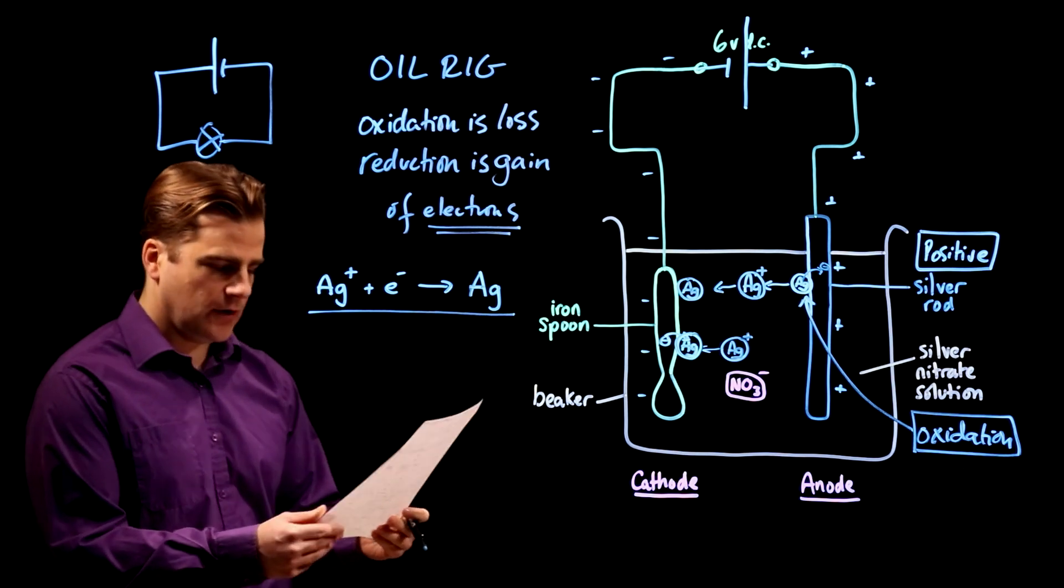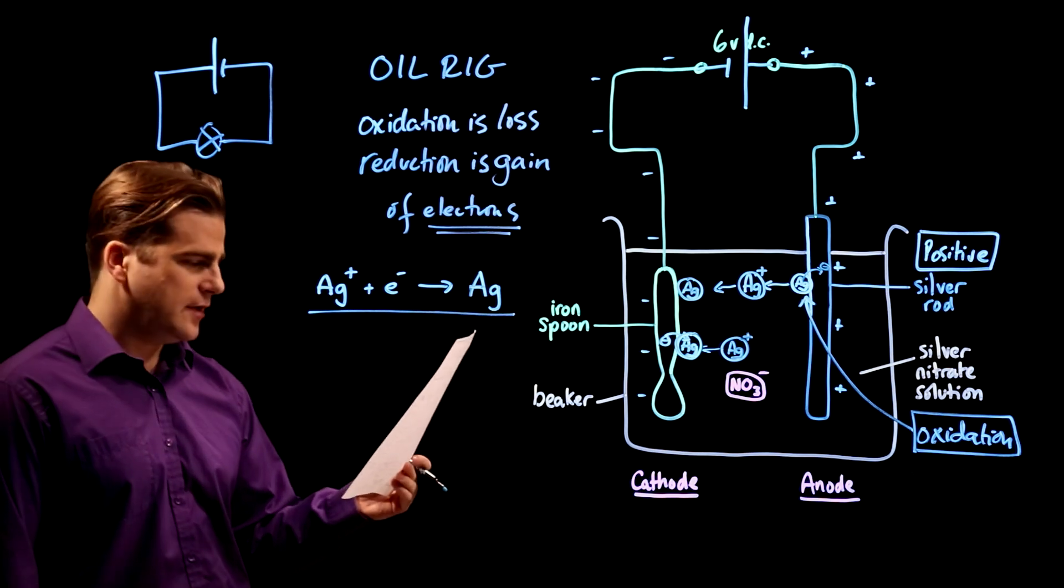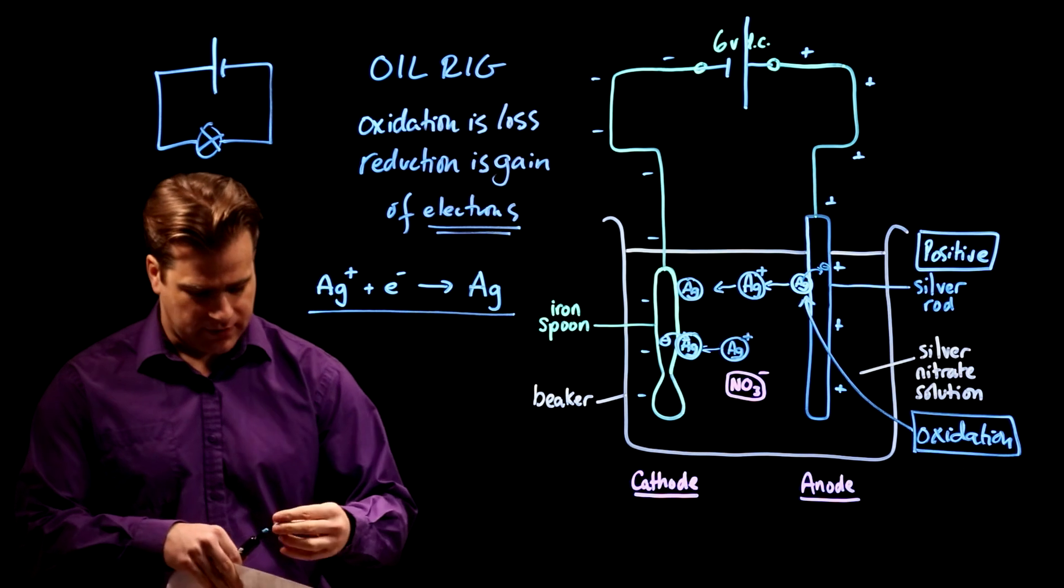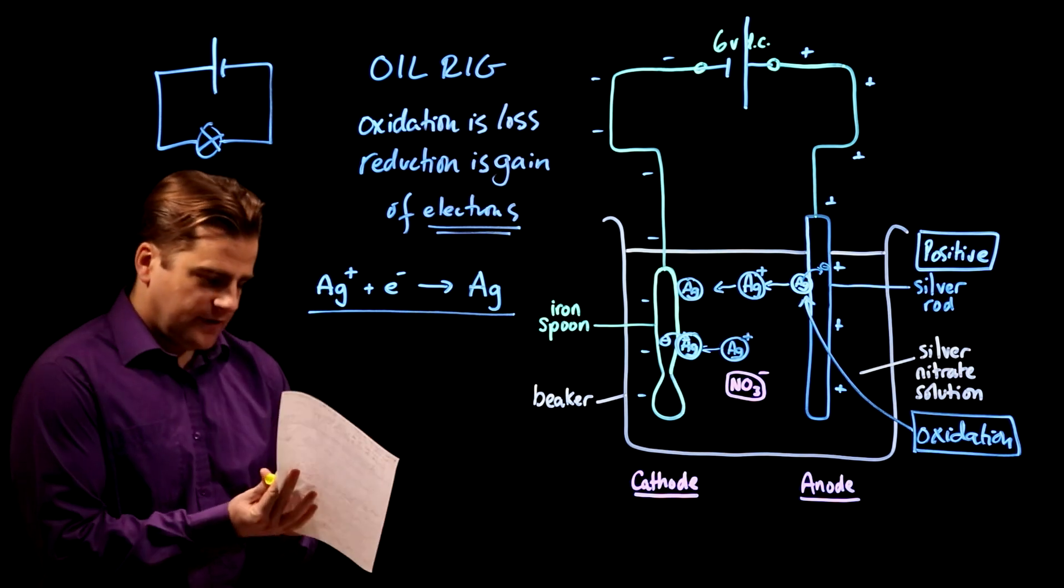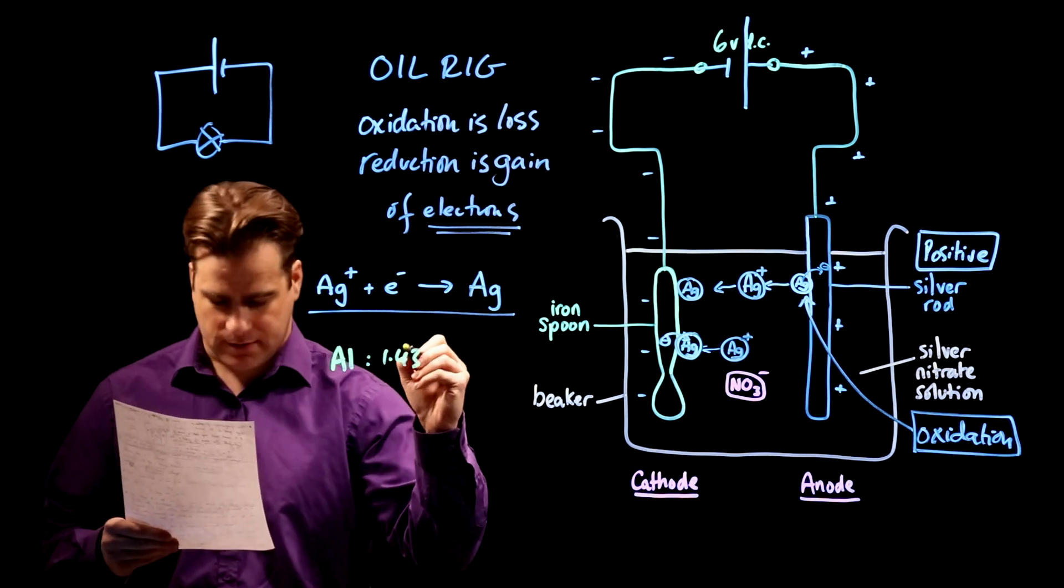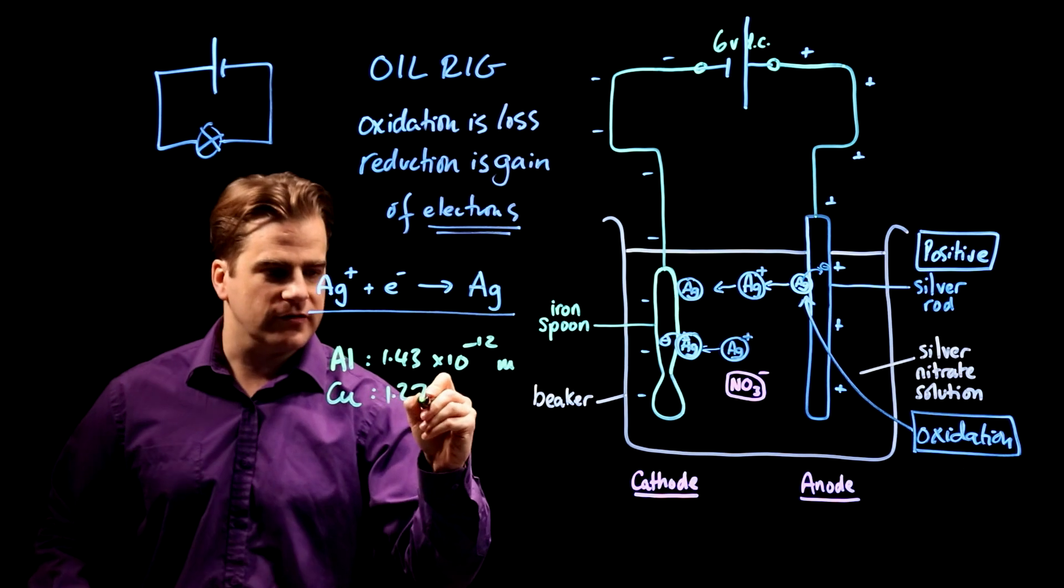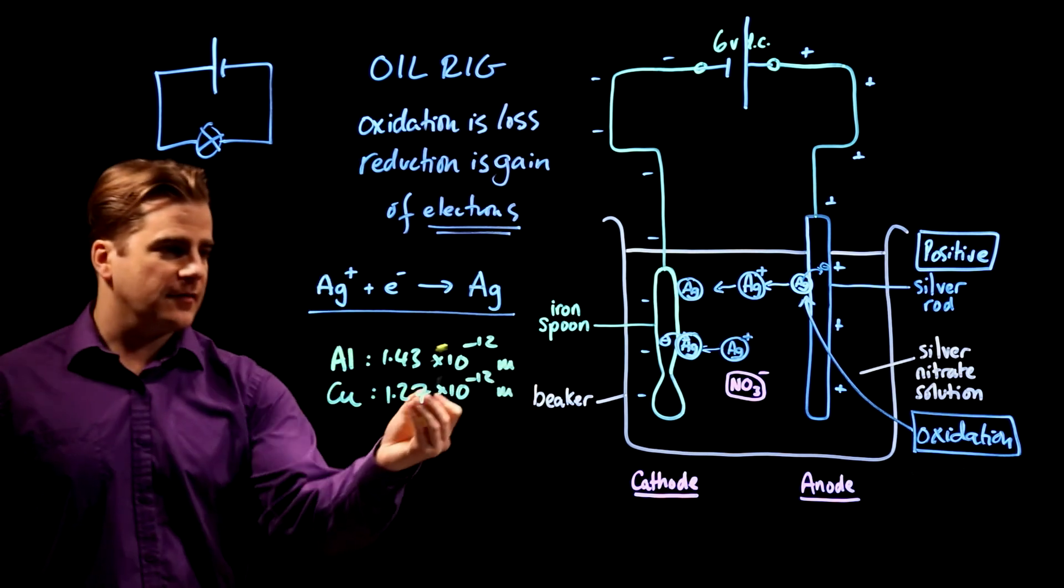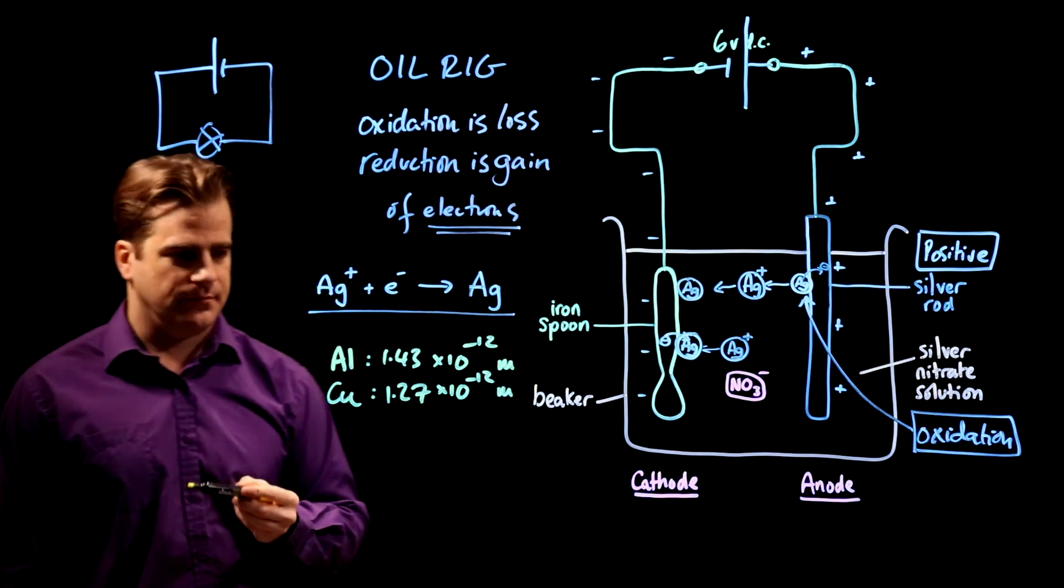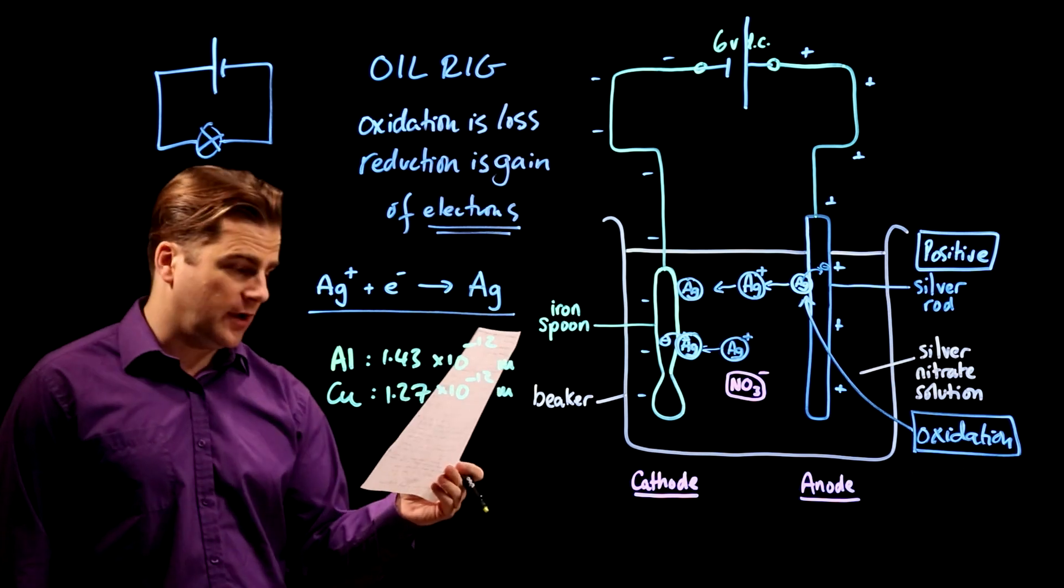Next question. Duralumin. I've no idea how to pronounce that. Duralumin? Who knows? It's an alloy of aluminium and copper. The radii of the atoms are. So we have, let's have a change of colour. We're told that this is the radii of the atoms. Aluminium is 1.43 times 10 to the minus 12 meters. And copper is 1.27 times 10 to the minus 12 meters. 10 to the minus 12 is a picometer. Did you know that? So minus 9 is a nanometer, minus 12 is a picometer. So, question. Explain why copper added to aluminium to form the alloy makes the alloy stronger than pure aluminium. Two marks.